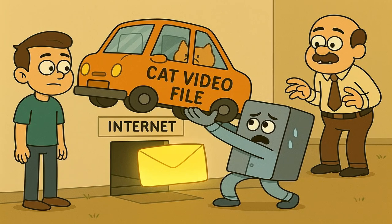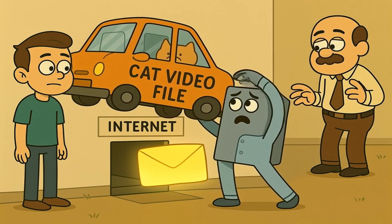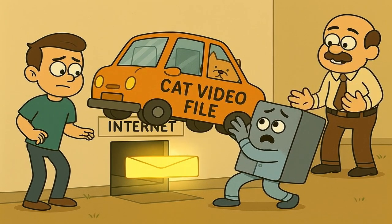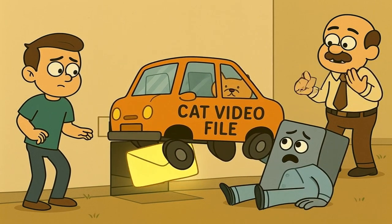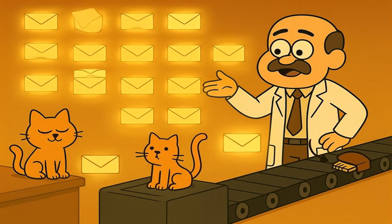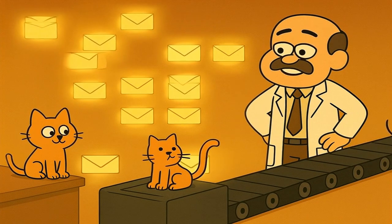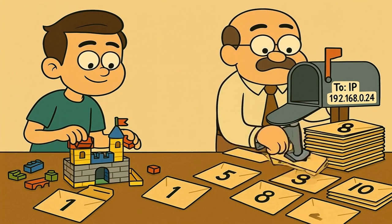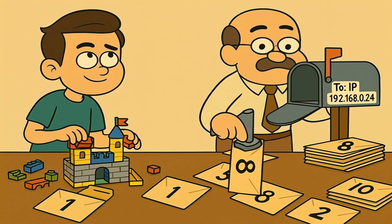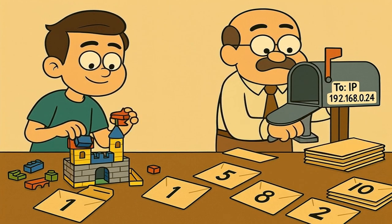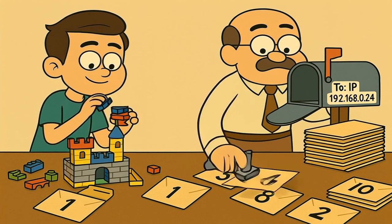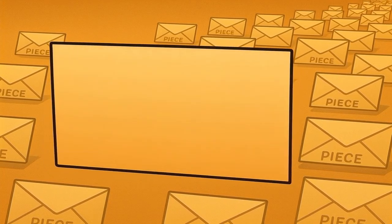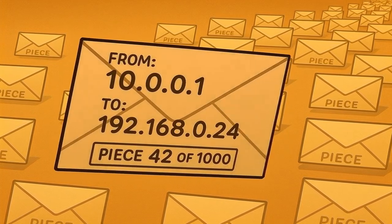So, you the client ask a server for a cat video. The server knows your IP address, but it doesn't send the whole video file at once. That would be like trying to shove an entire car through a mail slot — it simply wouldn't fit and would clog up the whole system. So instead, the internet is very clever. It breaks the big video file down into thousands of tiny little pieces, and these pieces are called packets. If you wanted to mail someone a giant LEGO castle, you wouldn't put the whole castle in a box. You'd take it apart brick by brick, put each brick in a tiny envelope, number it, and put the destination address on every single one. That's what packets are — tiny bite-sized chunks of the bigger file, each labeled with the destination's IP address, the sender's IP address, and information about where it fits in the puzzle.